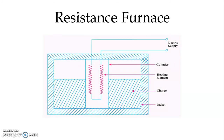In the figure we can see the indirect type of resistance furnace. Here also we have a heating element and we pass the current through the heating element, but the charge and the heating element are not directly in contact with each other. We have insulation provided between the heating element and the charge, and that is why the name is given as indirect resistance furnace.